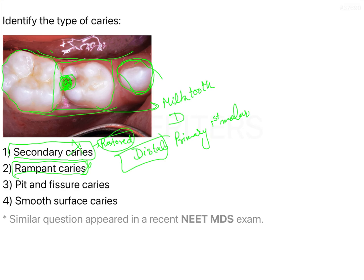Now pit and fissure caries versus smooth surface caries — this lesion is neither on the pit nor the fissure. It appears to be on the proximal surface, the distal surface area. So you can rule out pit and fissure caries as well, and you can choose smooth surface caries.